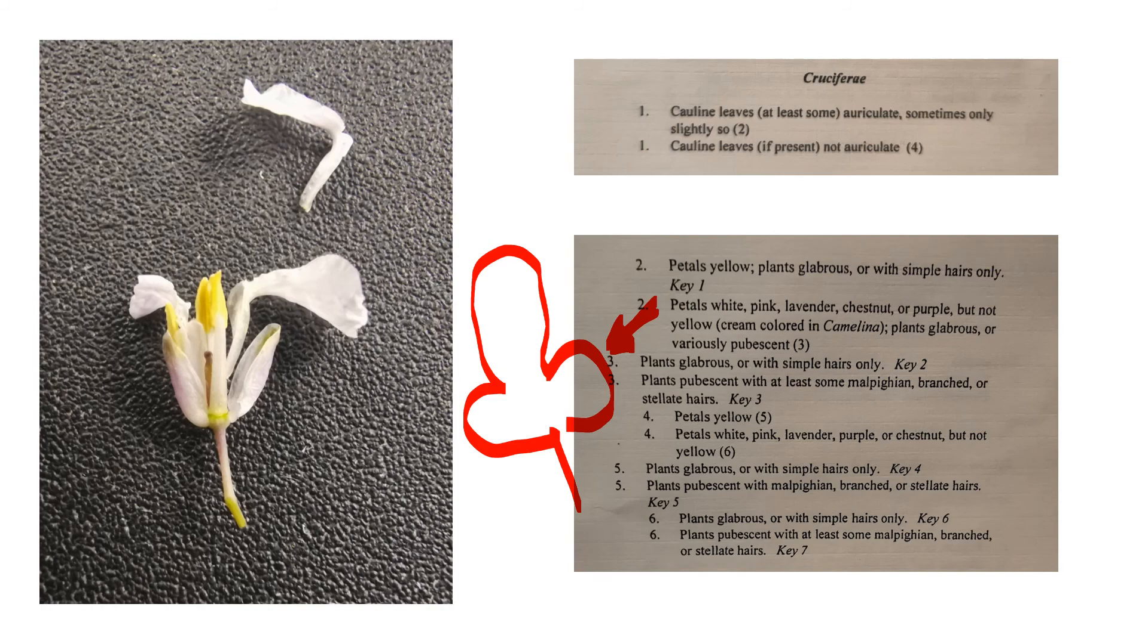Petals yellow, plants glabrous, or with simple hairs only. Petals white, pink, lavender, chestnut, or purple, but not yellow. Plants glabrous, or variously pubescent. And there were hairs in the last picture, but the key here too is that these are these white or pink flowers. So we're moving on to three. Plants glabrous, or with simple hairs only. And that is the case. There were simple hairs and some hairs. So we're looking to key two.